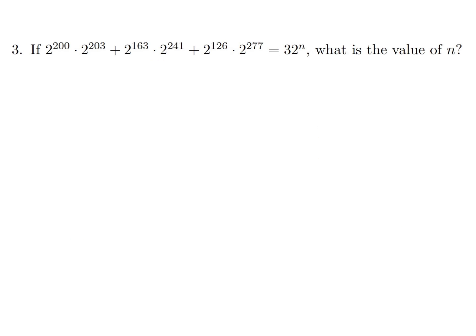If 2 to the power of 200 times 2 to the power of 203, plus 2 to 163 times 2 to 241, plus 2 to 126 times 2 to 277 equals 32 to the power of n, what is the value of n?